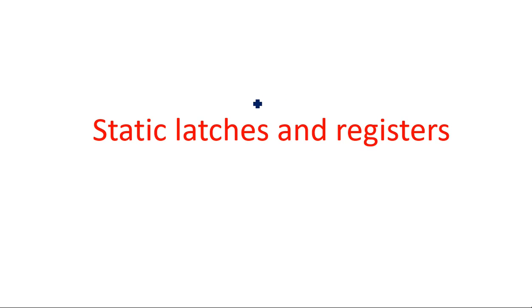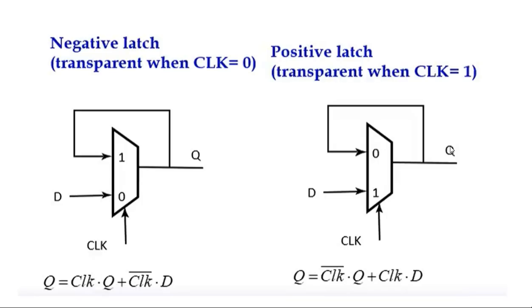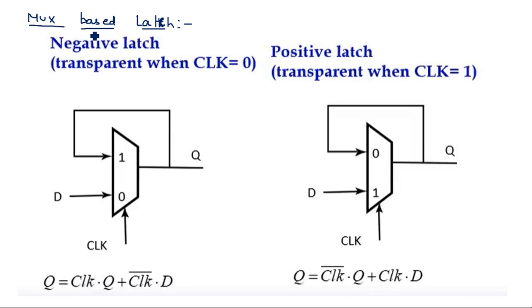In this video, we continue static latches and registers with MUX-based latches, where latches are constructed using a multiplexer. A multiplexer is a 2^n input, one output device, which can also be used to construct a latch operation — either a negative latch or a positive latch.